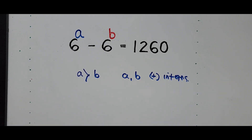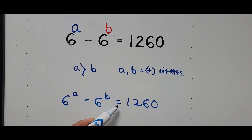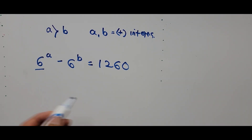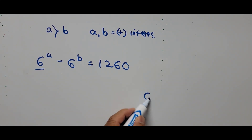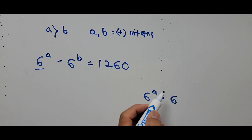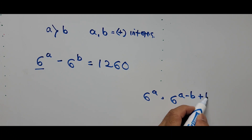Let's start the first solution. We have the equation 6 to the power A minus 6 to the power B equals 1260. Our focus is on the first term on the left: 6 to the power A. This can be rewritten as 6 to the power A minus B plus B.